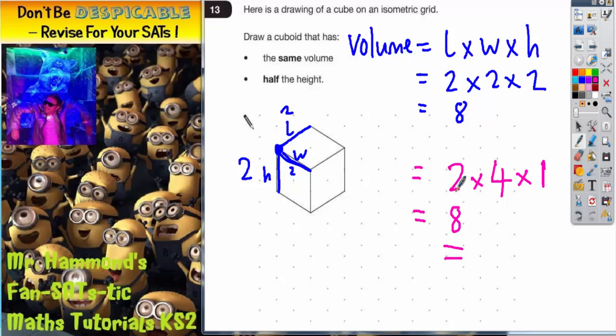Let's just double check that. So 2 × 4 × 1 does indeed give us 8. So we would have the same volume of 8 but we would have half the height as well, because the height would now be 1.